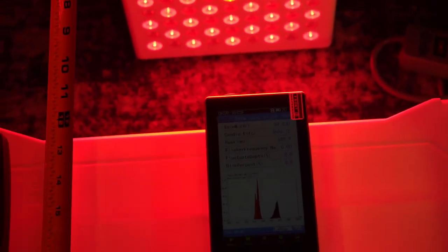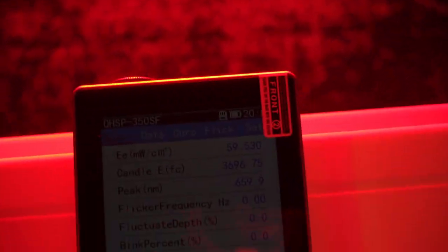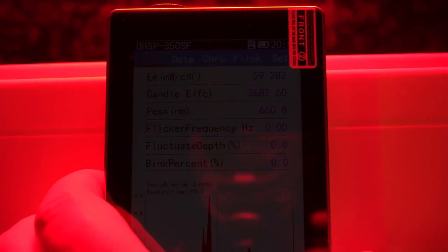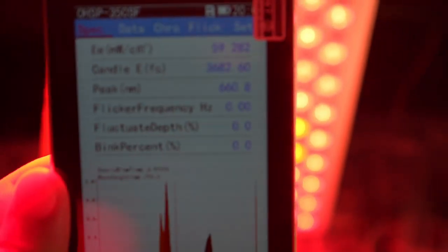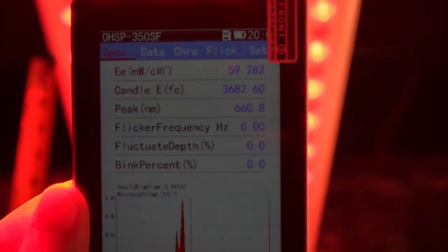We'll do our intensity measurement at 12 inches away. We centered it in line with the panel here. I'll just lift it up because there's too much glare. So we got 59 milliwatts per centimeter squared.